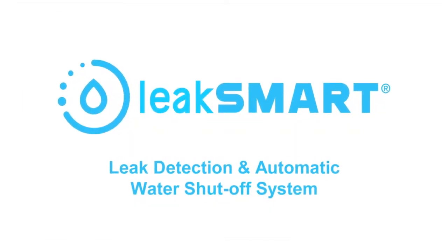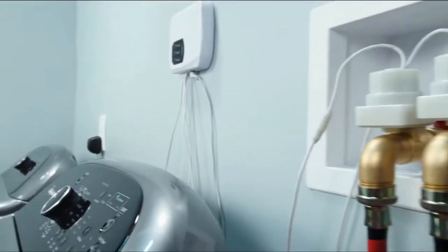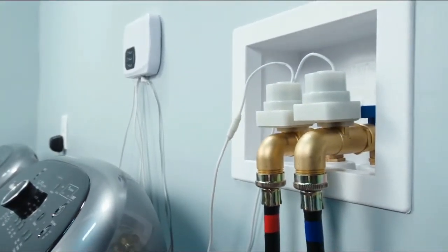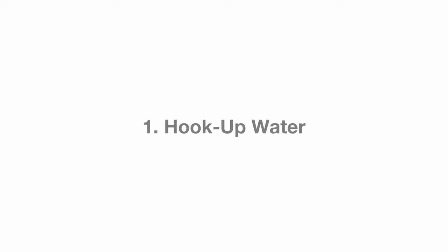Leak detection and automatic water shut-off system. Installing the washing machine kit is easy. First, hook up the water.